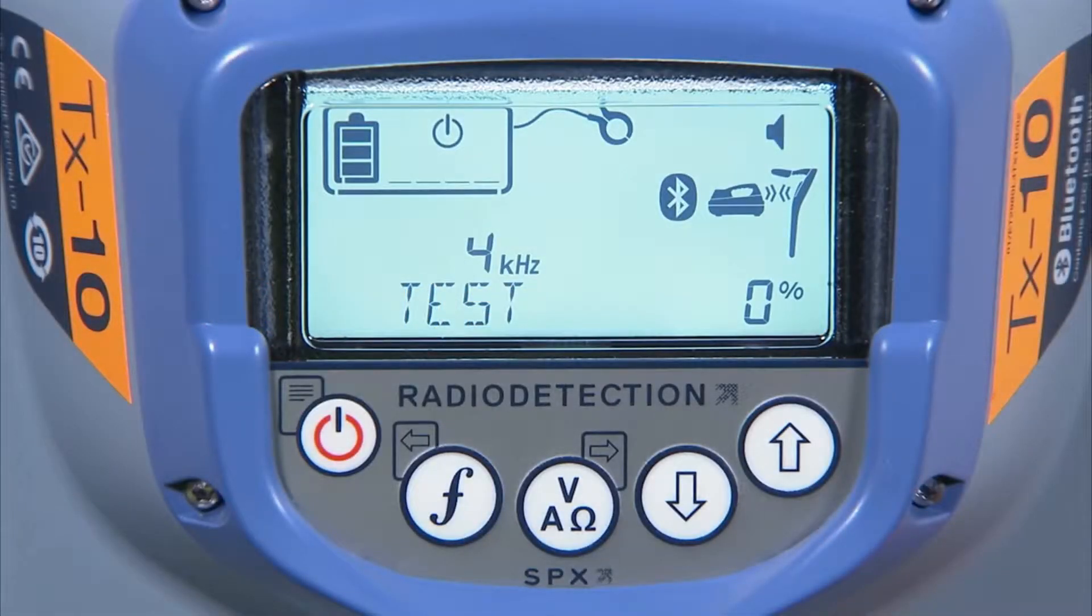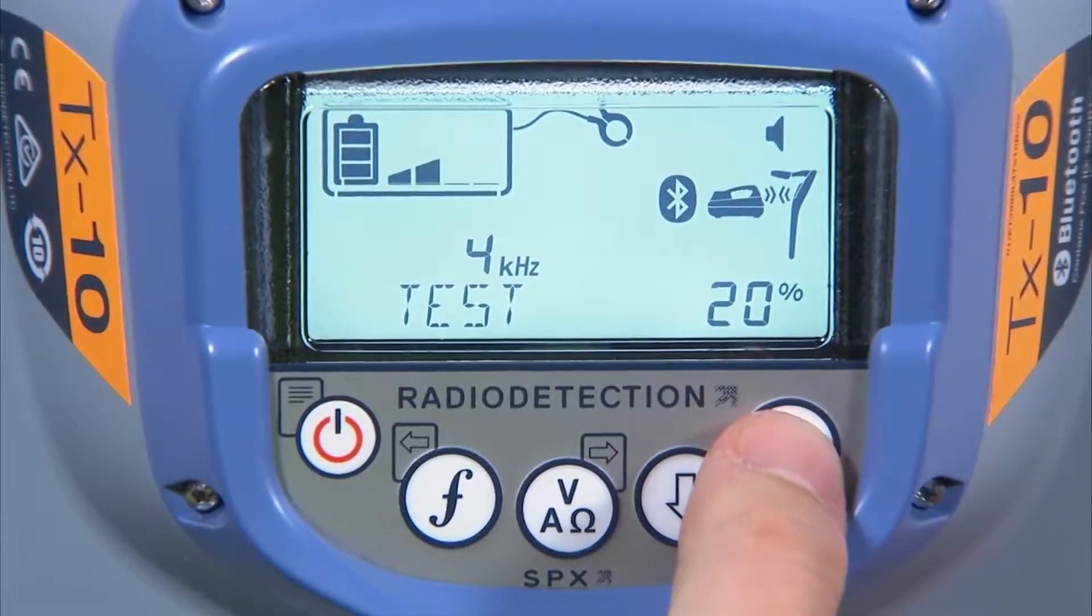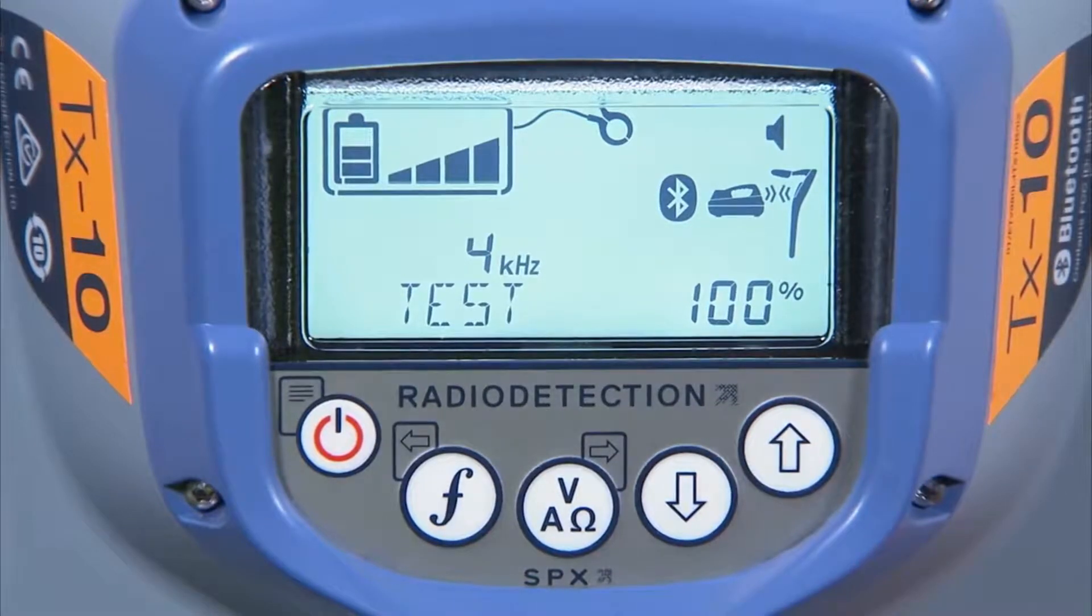When using the transmitter in induction mode or with a clamp, the transmitter has five output levels, which are standby mode, 10%, 20%, 50%, and 100%.